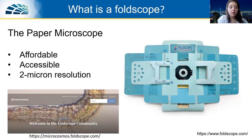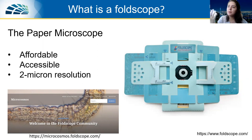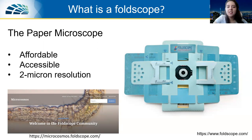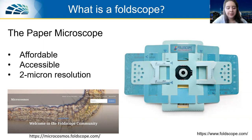There is a huge community working with foldscopes nowadays. People buy or receive kits, assemble them, and try to look at different things like flower petals, onion skin, and other objects of interest. Today, while learning about the foldscope, you can also grab yours, move around, and look at interesting things nearby. By going to the Microcosmos website, there are lots of examples of people using their foldscopes daily, and they also have a cool Instagram page where they share interesting results and discoveries.